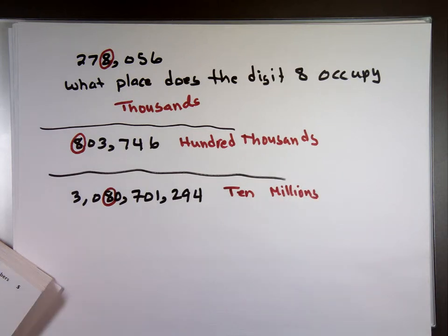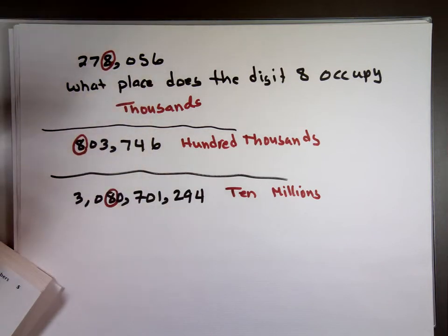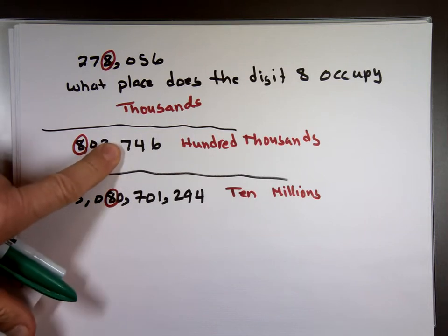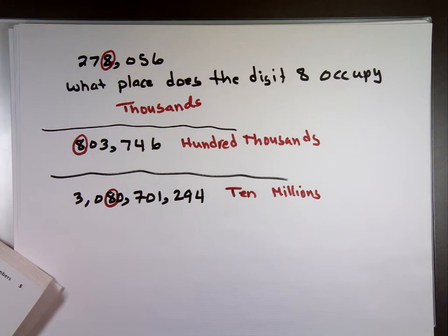So you'll see some of the problems on the homework is like this. What place does the digit 5 here occupy? That'll be what? Tens. What place does the digit 7 here occupies? Hundreds, right? What place the digit 7 in this one occupied? 100,000. So that's why I have to know the place of each location.